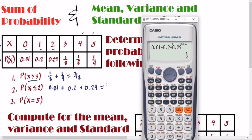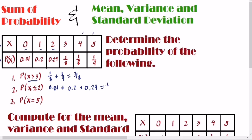Last, P(X = 5). When there's an equal sign, we only take the probability of that single value. The probability of 5 is 1/4, so 1/4 or 0.25 is our final answer. That's how easy it is to find the sum of probability. Now let's proceed with computing the mean, variance, and standard deviation.